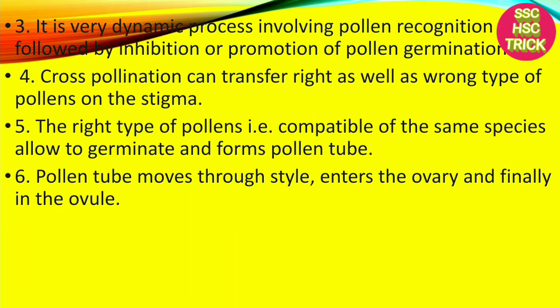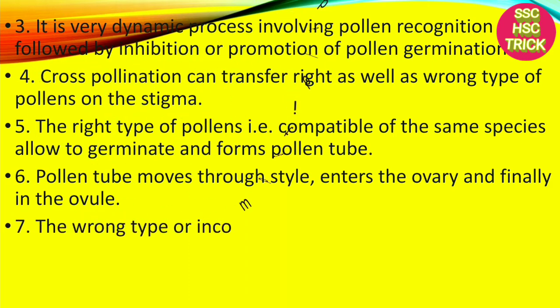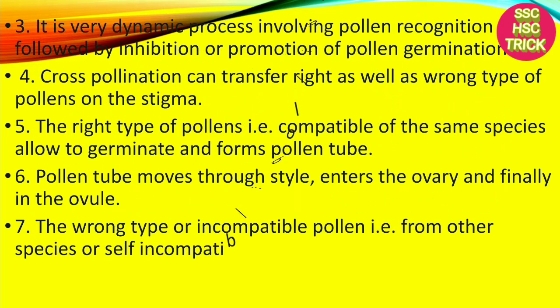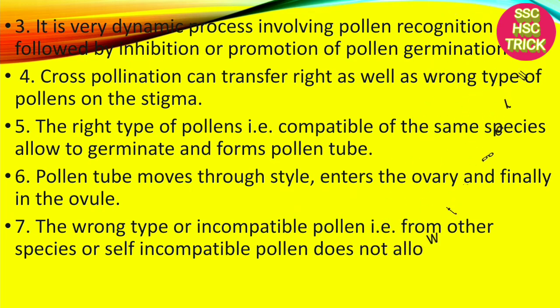The pollen tube moves through the style, enters the ovary, and finally reaches the ovules. The wrong type or incompatible pollen — from other species or self-incompatible pollens — is not allowed to germinate by the stigma.